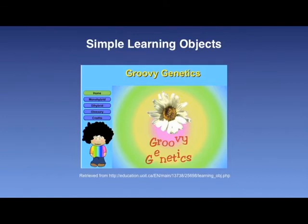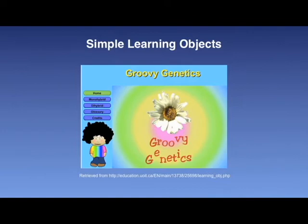Typically, a number of technical issues such as accessibility and adaptability are discussed, but a focus on the learning aspects may also arise. At one end of the spectrum, we may use the Wikipedia definition, which states that a learning object is a collection of content items, practice items, and assessment items that are combined based on a single learning objective, provided in a small, self-contained, reusable unit of learning. Since we are interested in digital forms of these objects, this needs to be added to the definition.